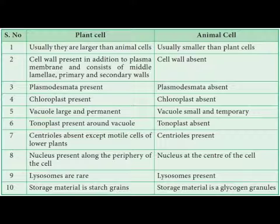Plant cells are usually larger than animal cells, while animal cells are smaller. Plant cells have a cell wall in addition to the plasma membrane, which consists of middle lamellae, primary and secondary walls. In animal cells, the cell wall is absent.